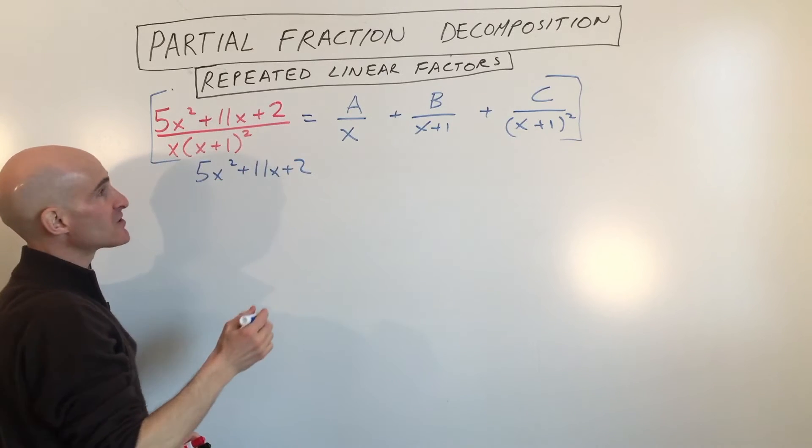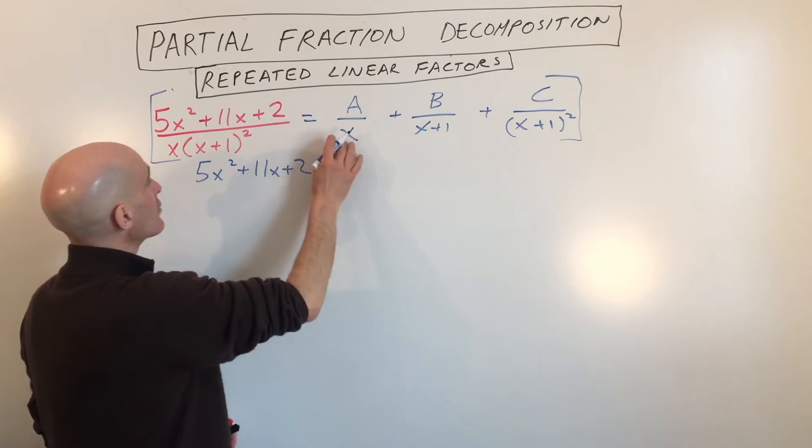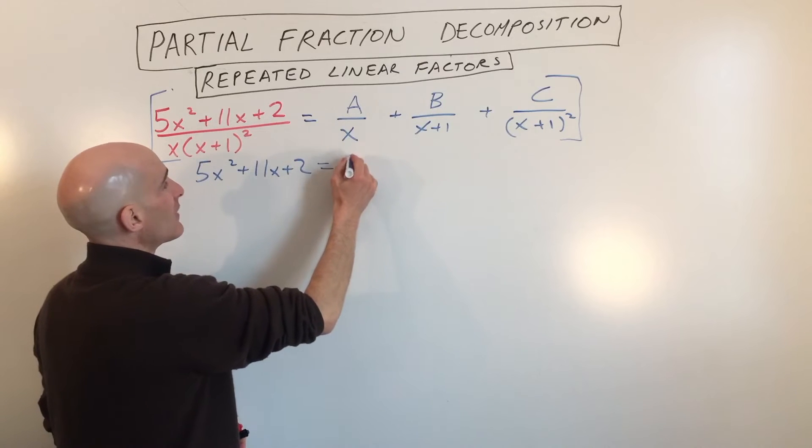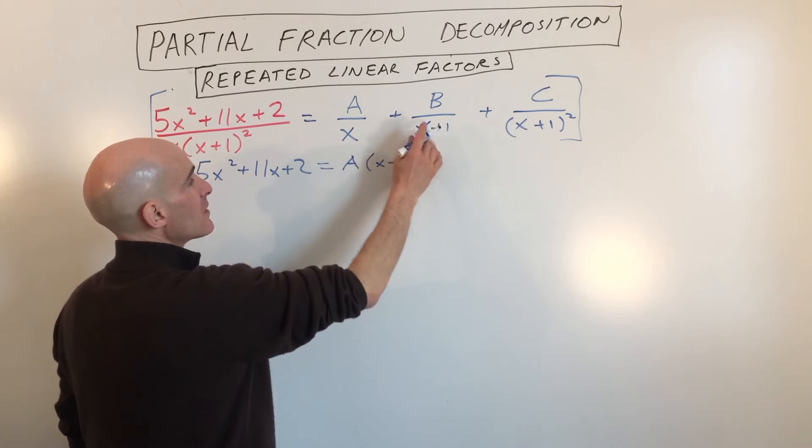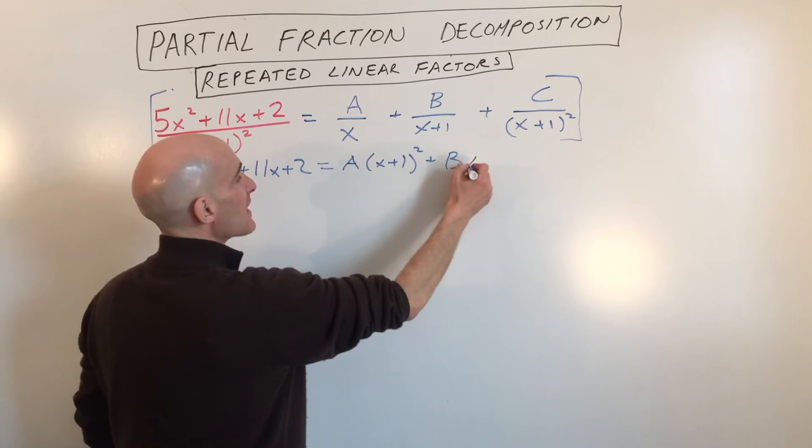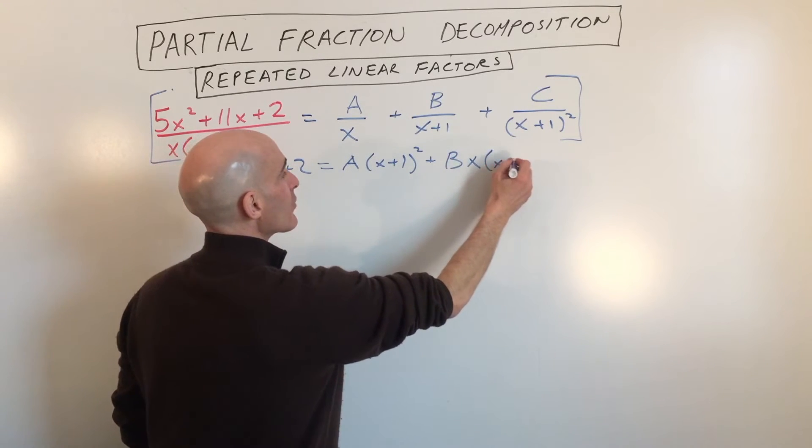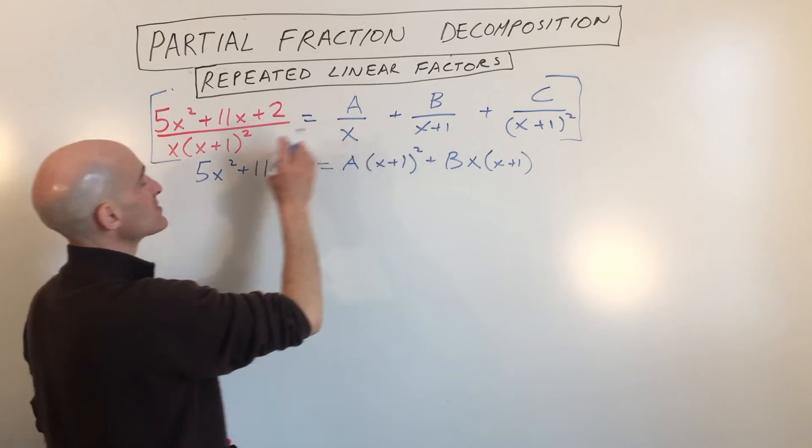5x squared plus 11x plus 2. Here the x's are going to cancel out. We're going to have A times x plus 1 squared, plus here we're going to have B times x times another x plus 1, because one of the x plus 1's is going to cancel.